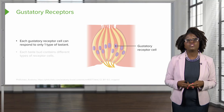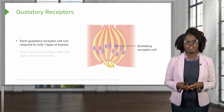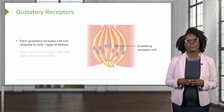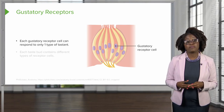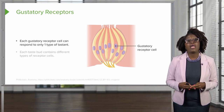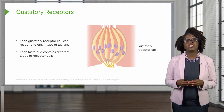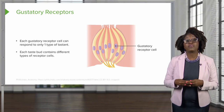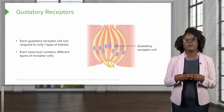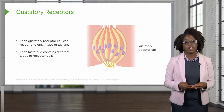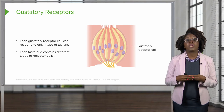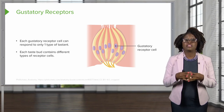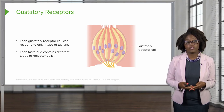The gustatory receptor cells can only respond to one type of tastant, and each taste bud contains different types of receptor cells so that we can interpret the different tastes that come into our mouths.